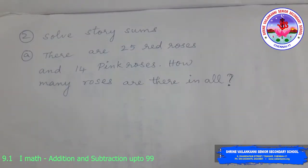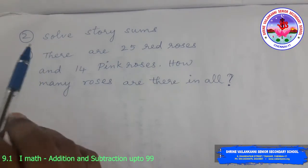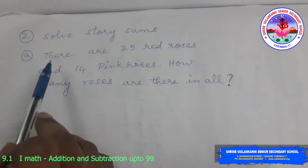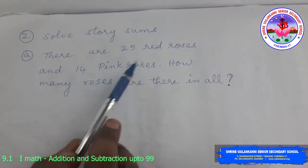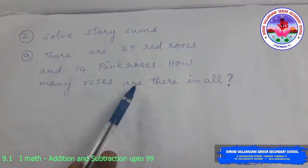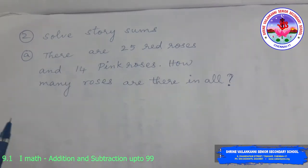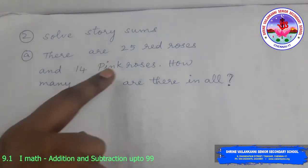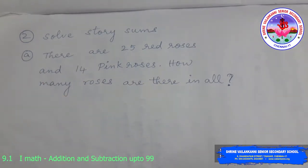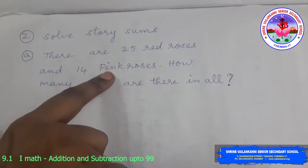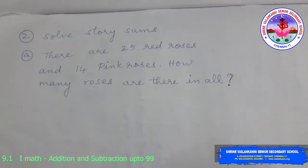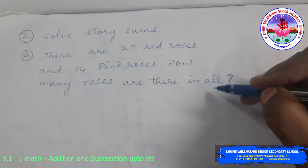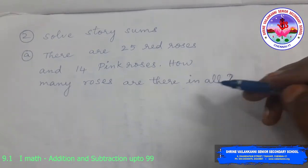In exercise 3, we are going to solve story sums. First, read the story sum. Listen carefully. There are 25 red roses and 14 pink roses. How many roses are there in all? So first you have to understand what the story sum is about. While you are reading itself, you will know it is about roses. There are some red roses and some pink roses. And you have to find out how many roses are there in all. These two words will indicate that you have to find the total.